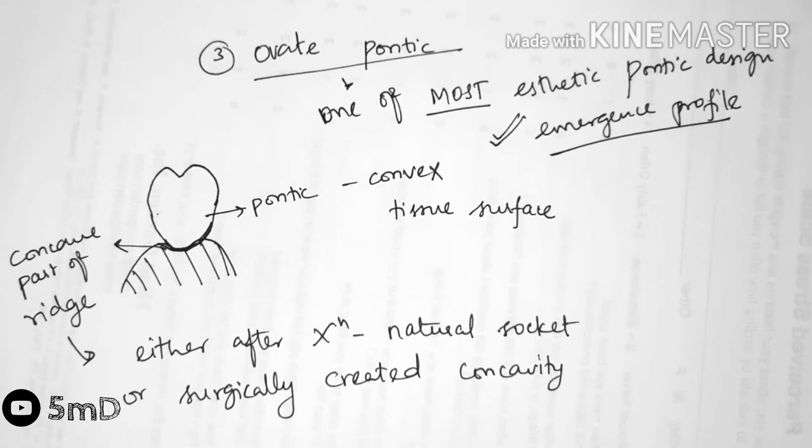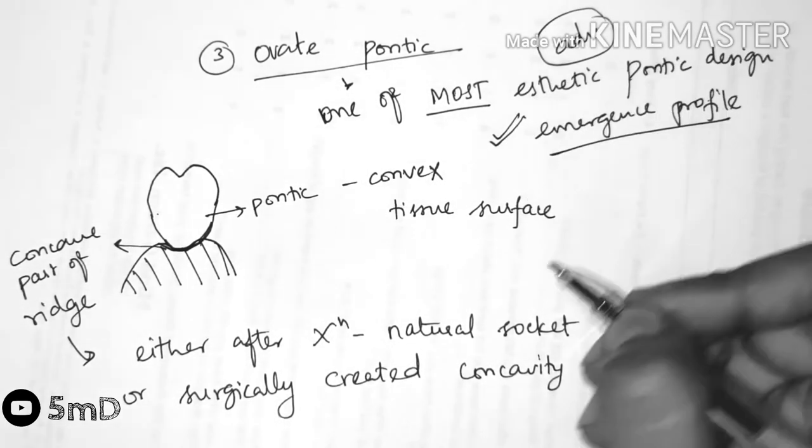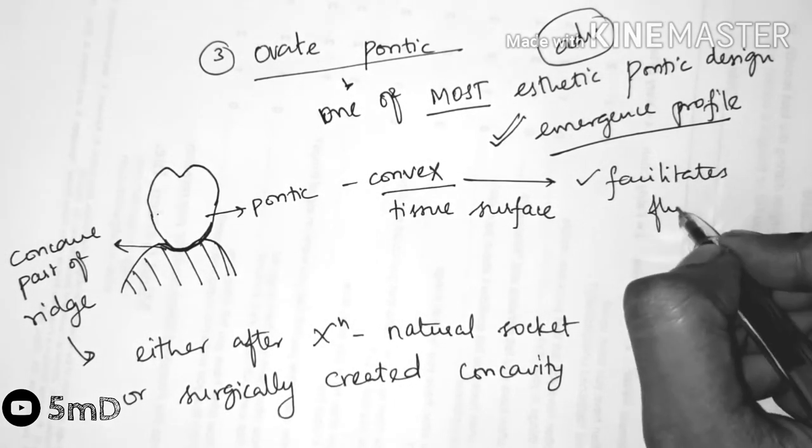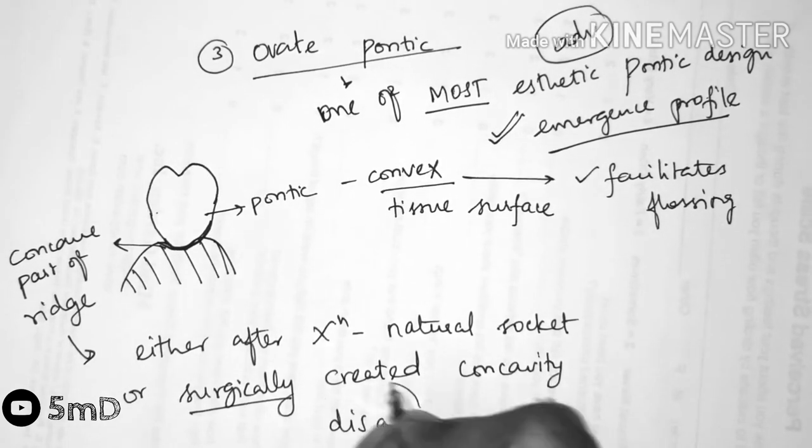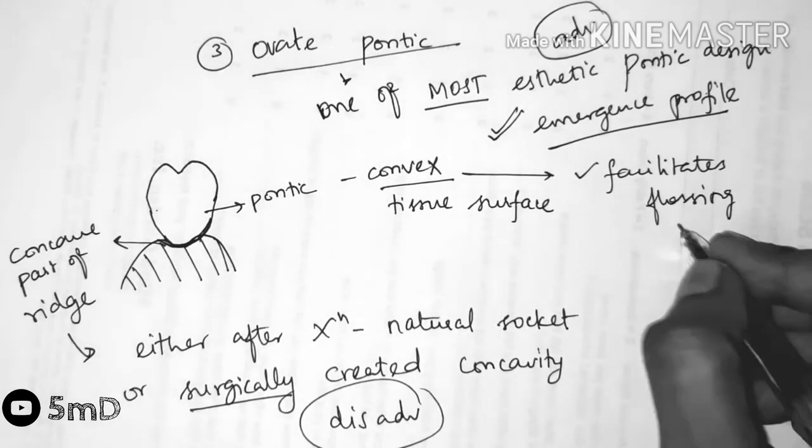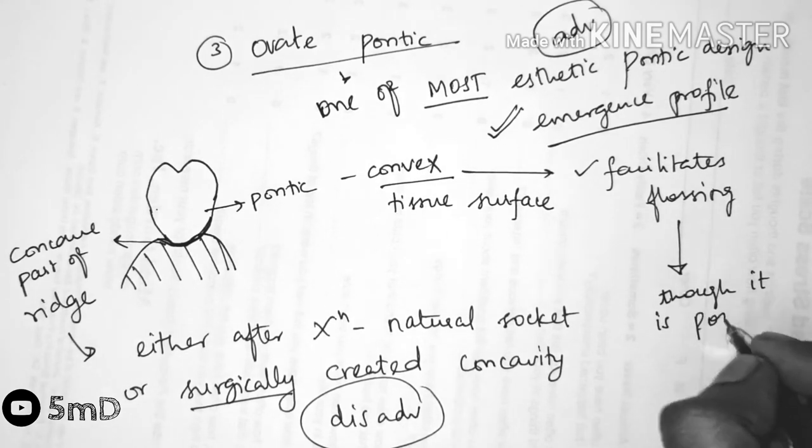But the disadvantage is that we need to create a surgical concavity in the ridge sometimes. And though it is possible to floss, it is not always completely flossable, therefore tissue inflammation is unavoidable.